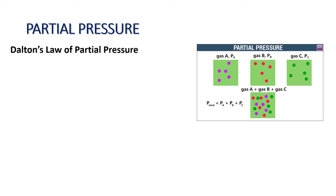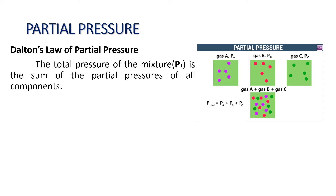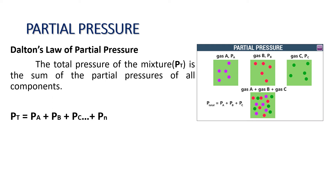Let us now talk about Dalton's law of partial pressure. The total pressure of the mixture, Pt, is the sum of the partial pressures of all components. So the formula for total pressure is: partial pressure of A plus partial pressure of B plus partial pressure of C, or plus Pn if there are other gases present in the mixture.